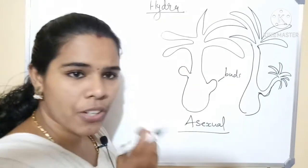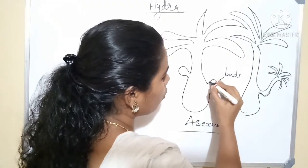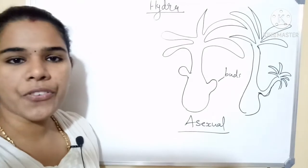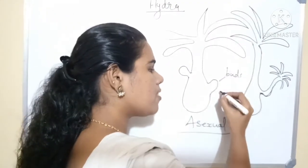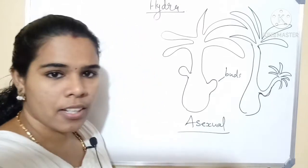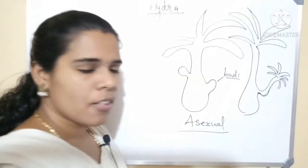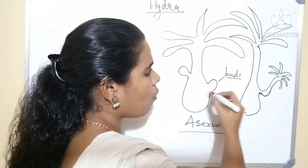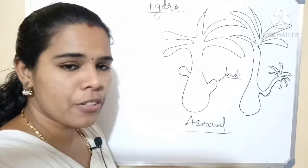So in the case of Hydra, small bulges emerge from the mature Hydra, and after that these bulges develop into a new individual. These bulges are called buds. The buds are formed and divide again to form a new individual — a new Hydra.